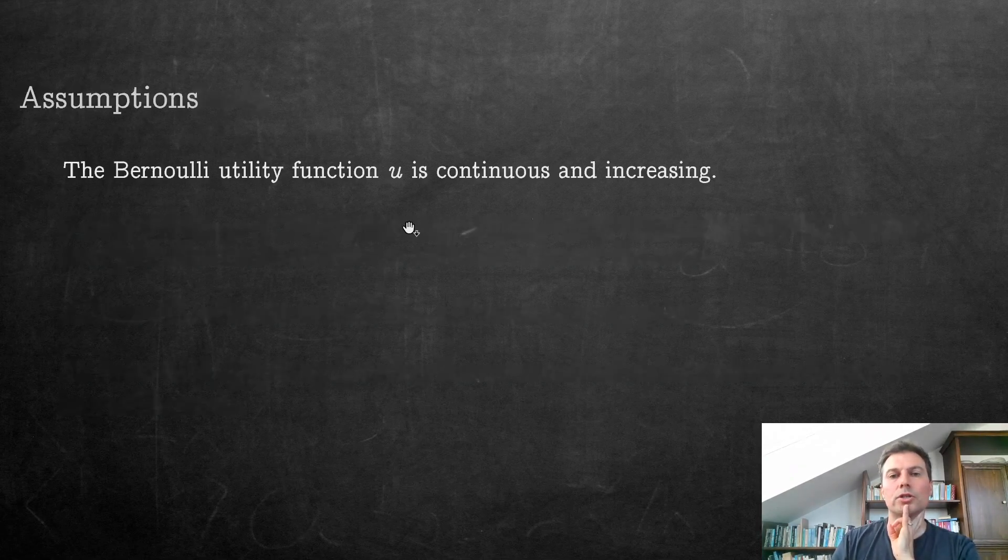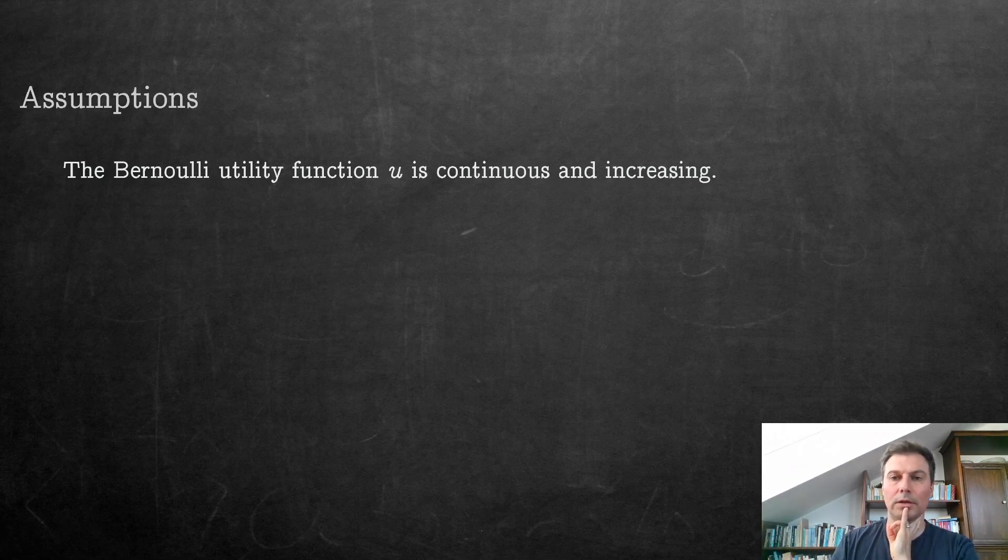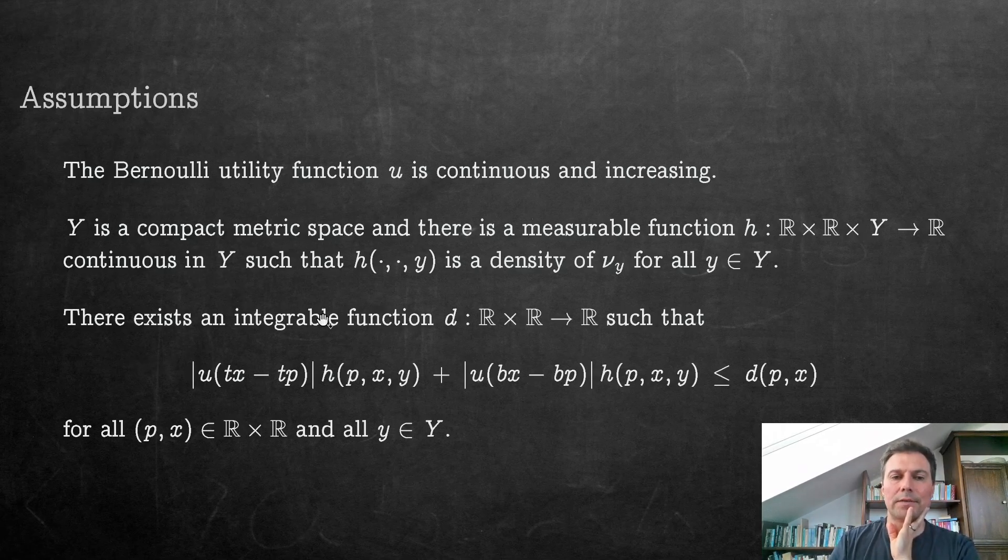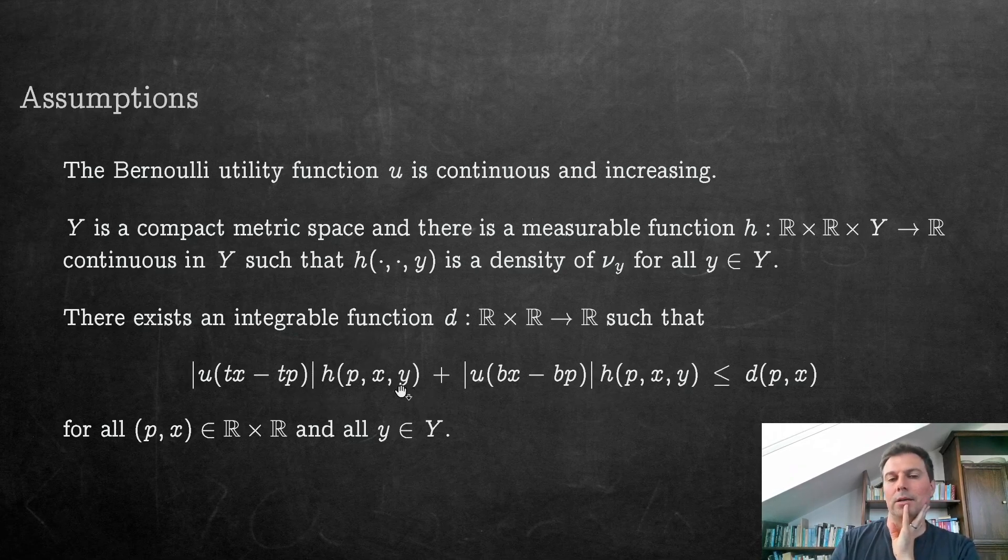We're going to have to make a few assumptions. First of all, the Bernoulli utility function is continuous and increasing. For the main result, we don't even need it to be concave. This space of models is a compact metric space. And there is a measurable function H, which is basically the density. So what does it depend on? It's a density of pairs, prices, and final values. And it's indexed by the models. So each different Y gives you a different density. And so that's what we have. This is our state space. This is what the decision maker has in mind. The decision maker does not know what is the true model. But this is this range of possible true models. And this is a very technical assumption. Let me just say briefly that it means that we can even allow fairly fat tails, but the tails are not allowed to be super duper fat. But one could probably even dispense with this a little bit. This is adapted from Balder 1988.